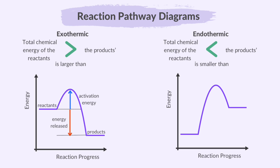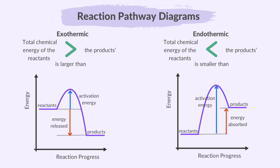In the case of an endothermic reaction pathway, the energy of the products is higher than that of the reactants. The curve represents the activation energy. Following this, the energy level of the products is higher than that of the reactants, indicating that additional energy is absorbed from the surroundings to form the products.